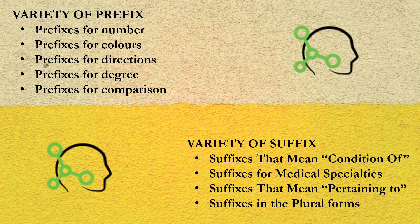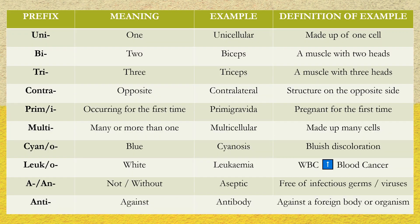Prefixes for numbers, colors, directions, degrees, and comparisons are very common in medical lingo, while suffixes indicate conditions, medical specialties, resemblance, and plural forms. We shall now see some examples. These are commonly used prefixes and their meanings.